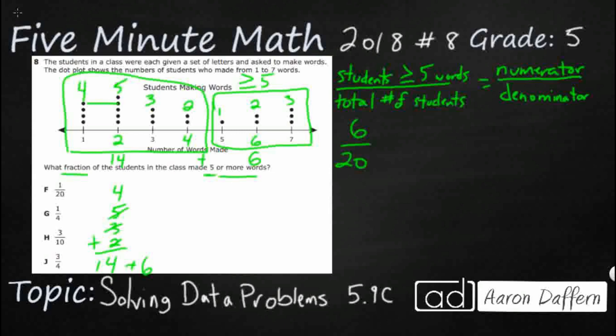So look at that, I found my answer. Remember, 6 students had 5 or more words out of 20 total, and that answer is not there. Because if you are a fifth grader and you're dealing with fractions, you know that most of the time your answer is not your answer because you need to reduce or simplify.